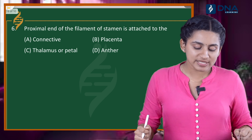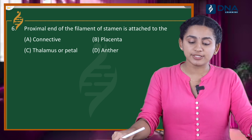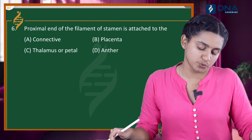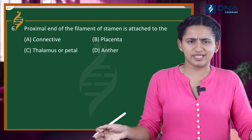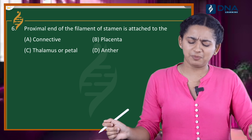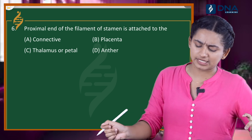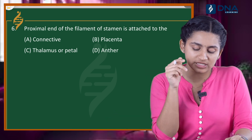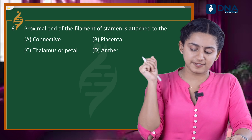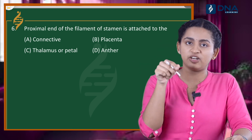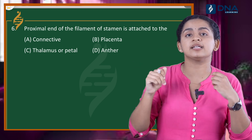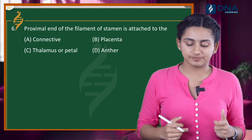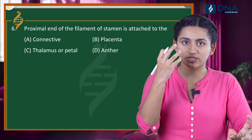Question number 6: The proximal end of the filament of a stamen is attached to what? Option A: connective. Option B: placenta. Option C: thalamus or petal. Option D: anther. The stamen is the male reproductive organ. The filament of the stamen — its proximal end is attached to where?